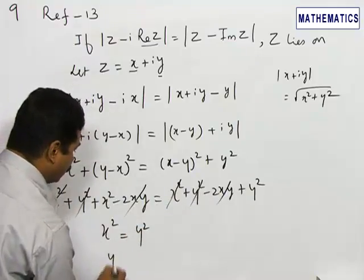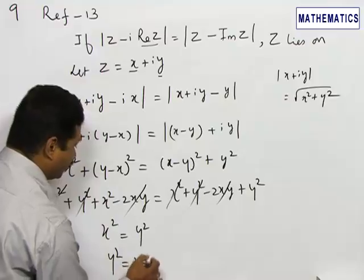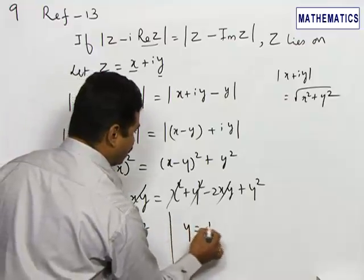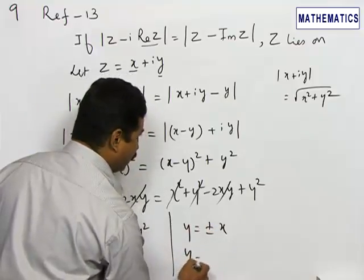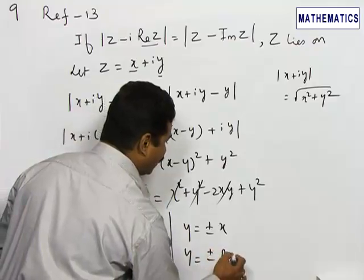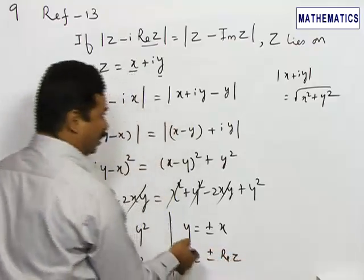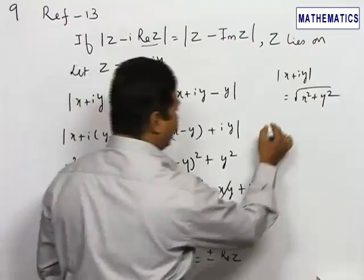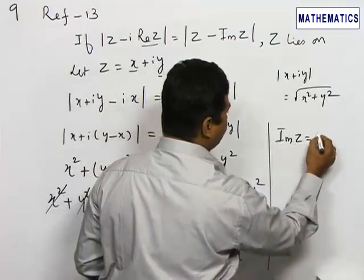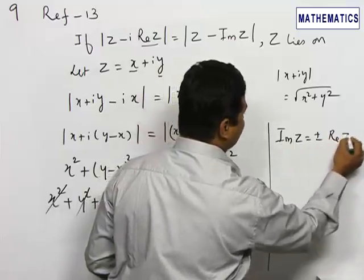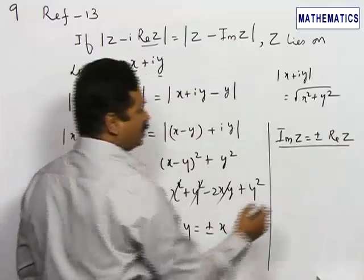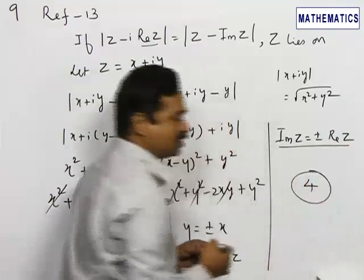I am going to write this as y squared equals x squared. From this condition, y equals plus or minus x, or I can write y equals plus or minus real of z. Instead of y, I can write imaginary of z equals plus or minus real of z. If you see all four choices, choice 4 is the correct answer.